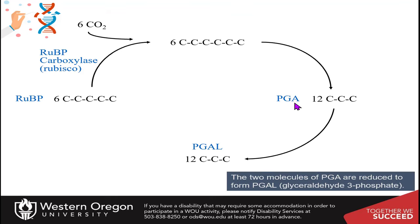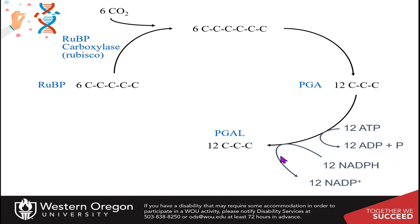The phosphoglycerate is reduced to glyceraldehyde 3-phosphate. In this process you need 12 molecules of NADPH to do the reductions, and you also need 12 ATP molecules to mediate these reactions because you need to generate a bisphosphorylated intermediate in this pathway.